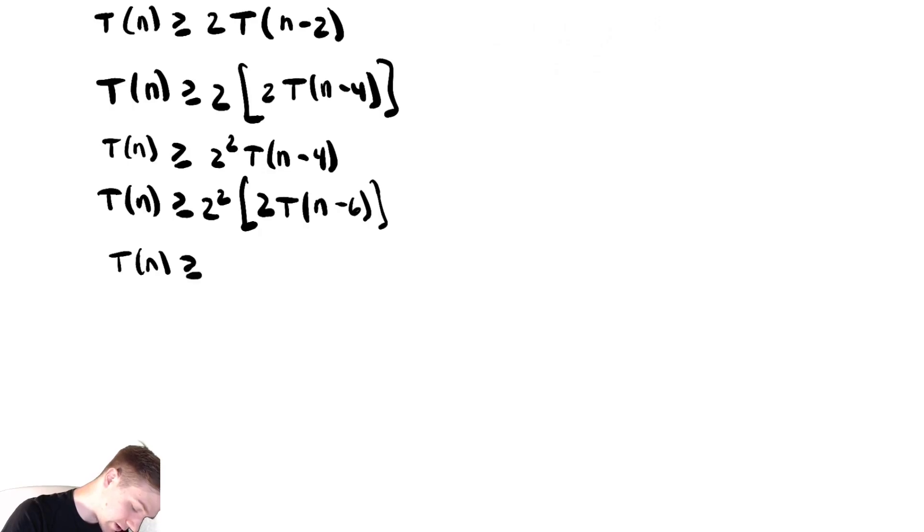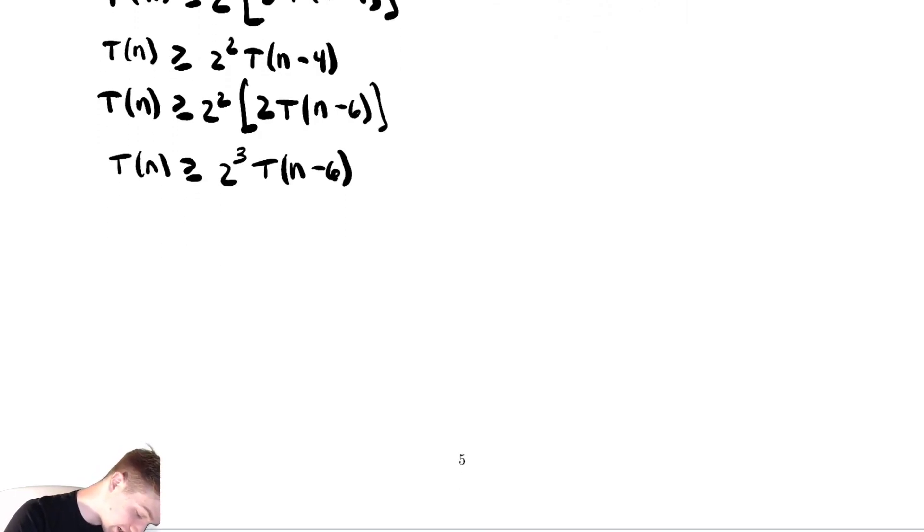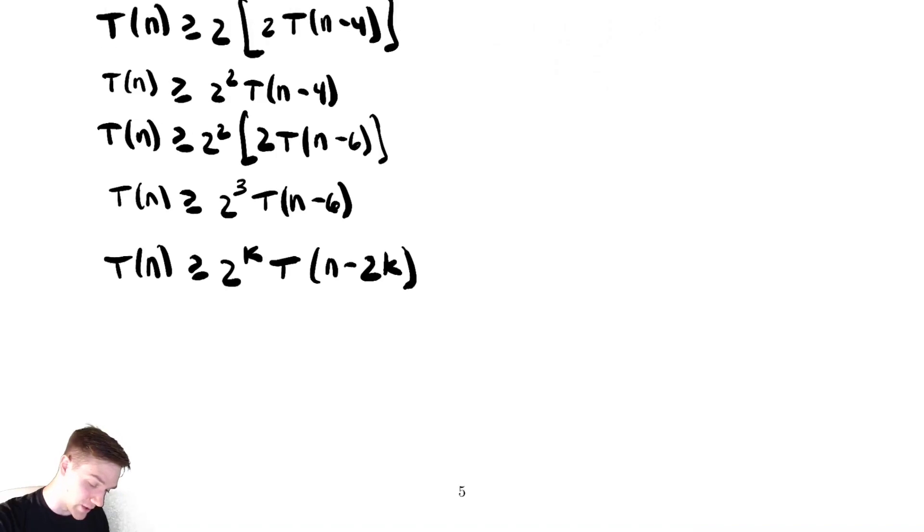So t of n is greater than or equal to two to the k times t of n minus two k. Let's double check that really quick.